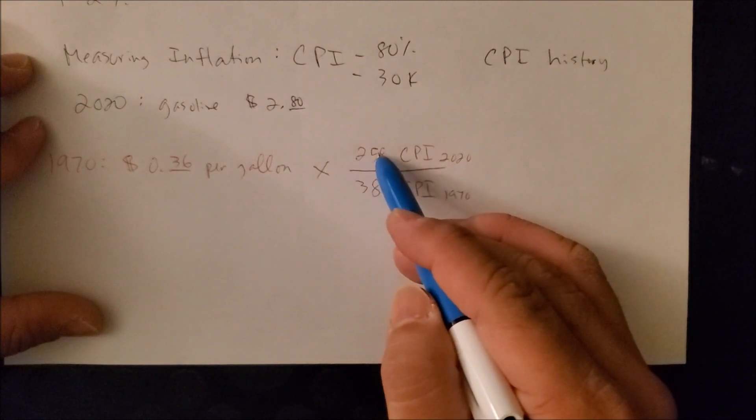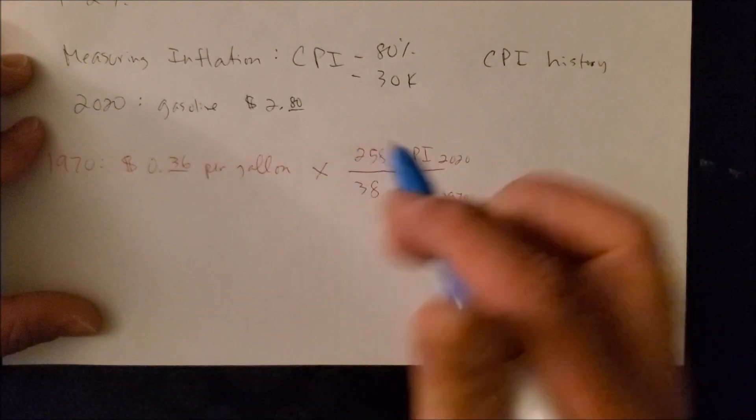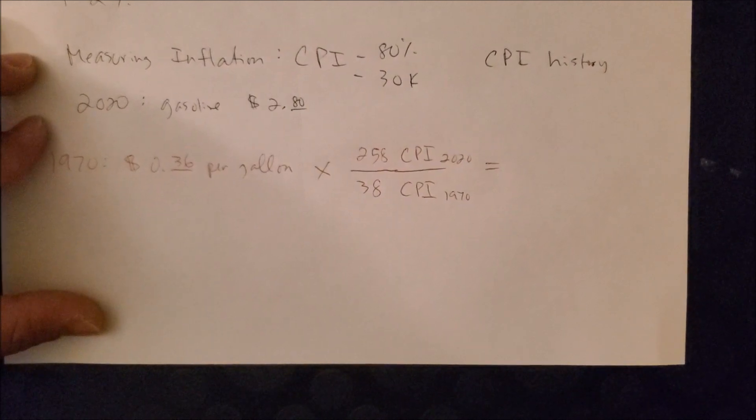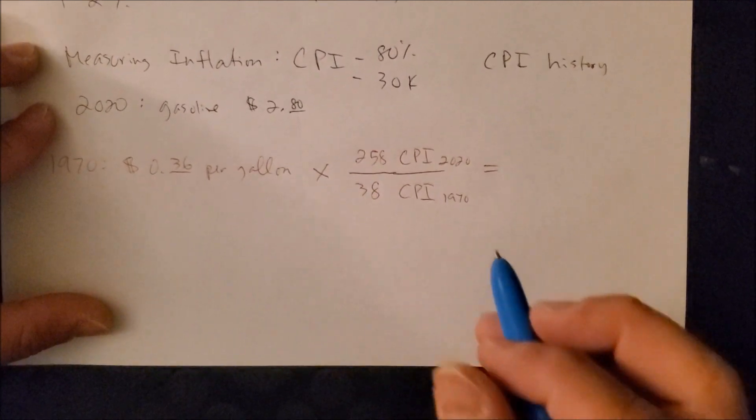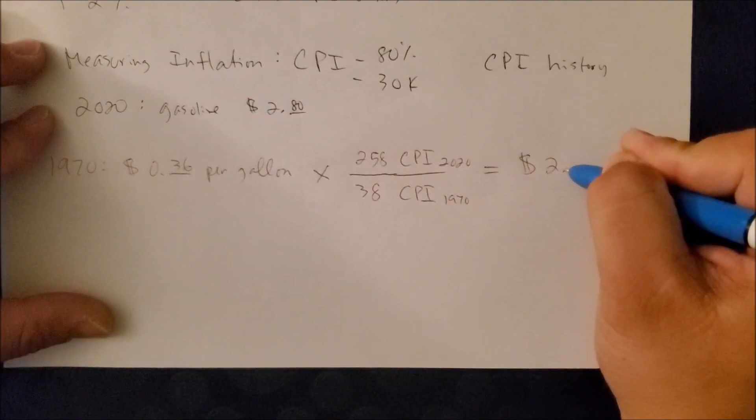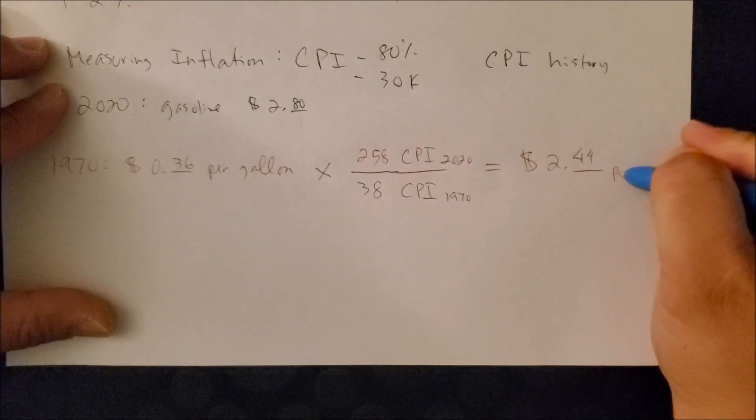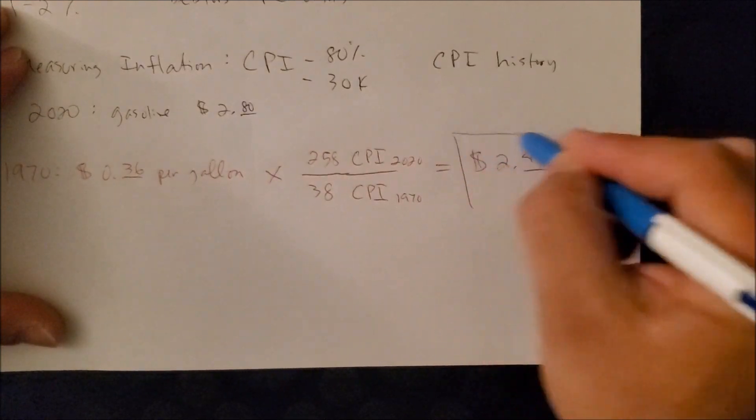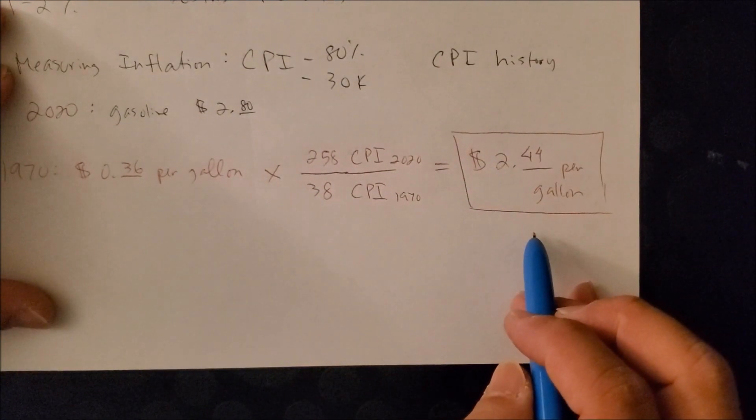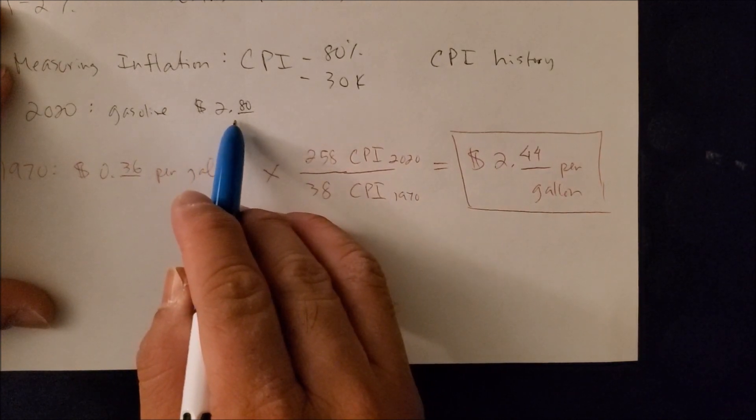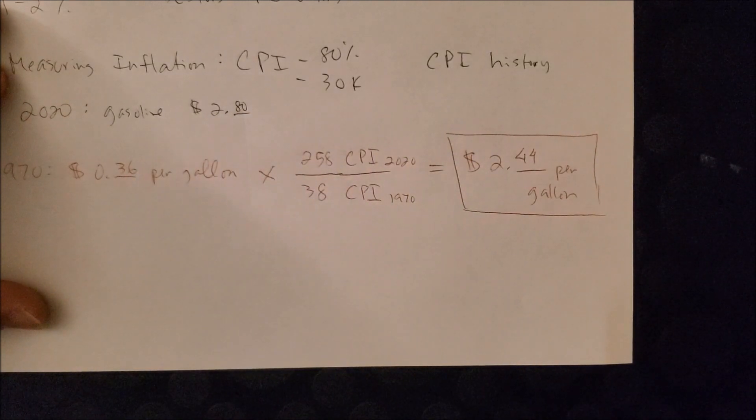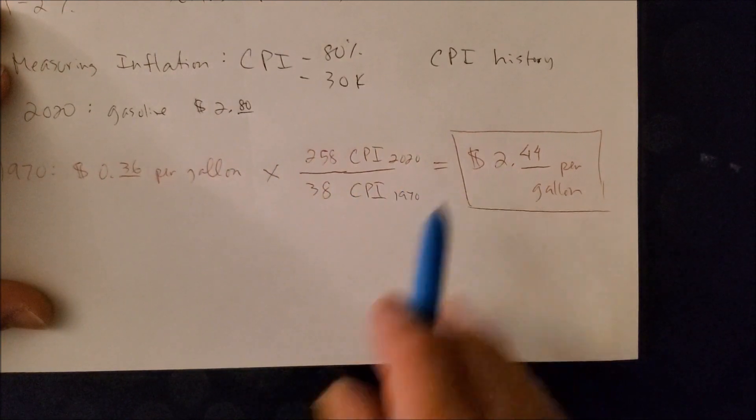Now we can divide 258 over 38 times 0.36 to see if we are overpaying, paying about right, or underpaying gas price per gallon today. So once we have done the steps, we end up with $2.44 per gallon. So now when we measure what the price of gas should be based on inflation to what we're paying today at $2.80, we can then see that we are overpaying today. And that's how you calculate the inflation rate from a different year to today's current year.